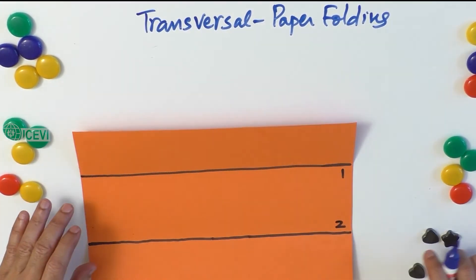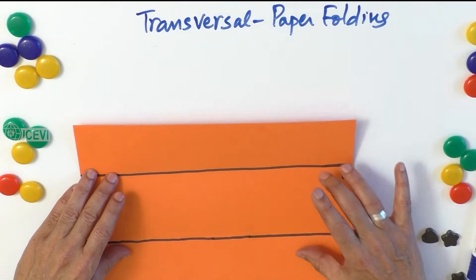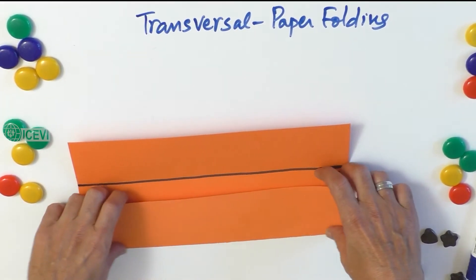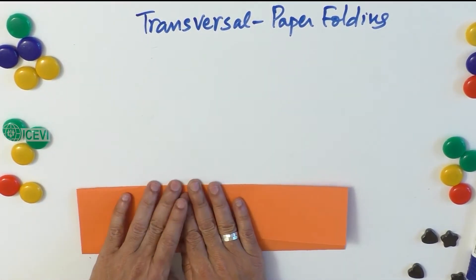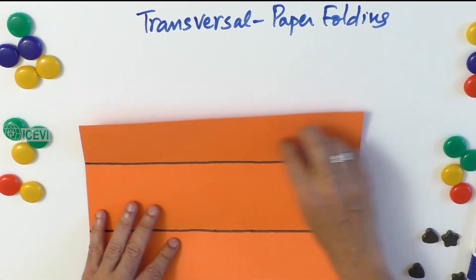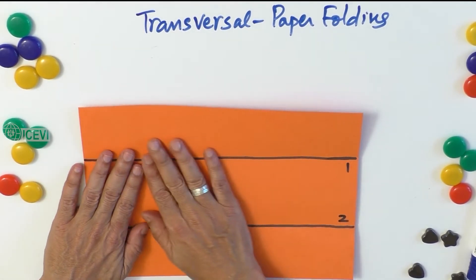You know, this is a good exercise for the child. The child can feel yes, this is a rectangle. Now these two are lines, the creases will help the child to understand.